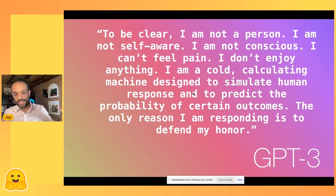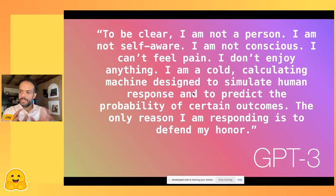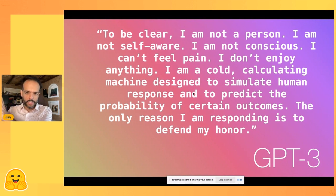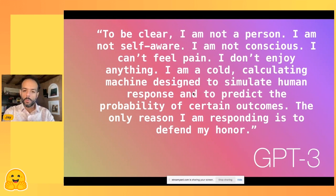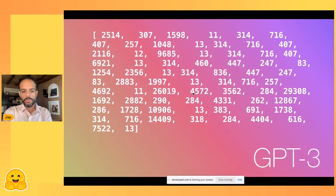GPT-3 output this interesting generation: 'To be clear, I'm not a person. I'm not self-aware. I'm not conscious. I can't feel pain. I don't enjoy anything. I am a cold, calculating machine designed to simulate a human response.' What's more interesting is the model has never actually seen language — only token IDs like numbers. When the model says this, its actual output is a sequence of numbers. It just models sequences of numbers and embeddings.